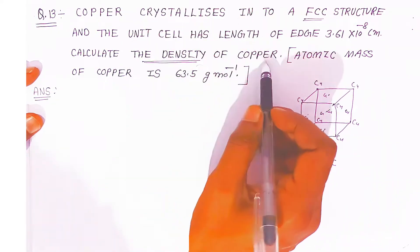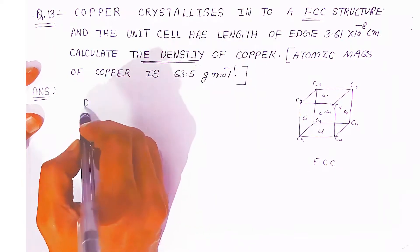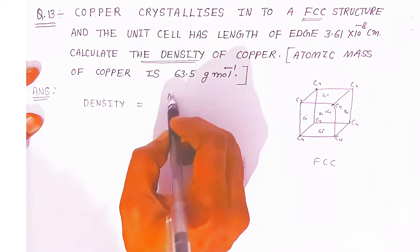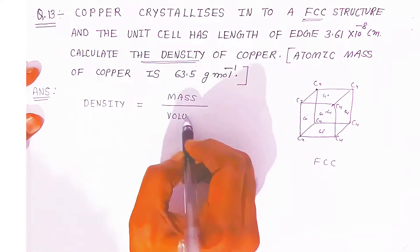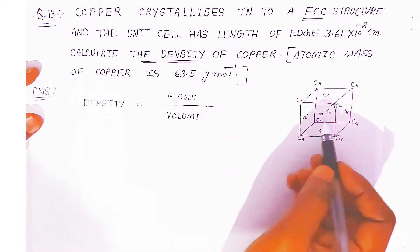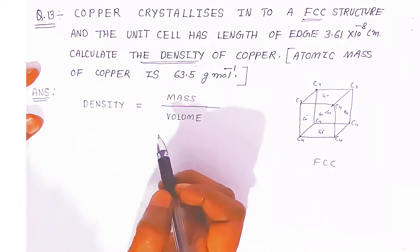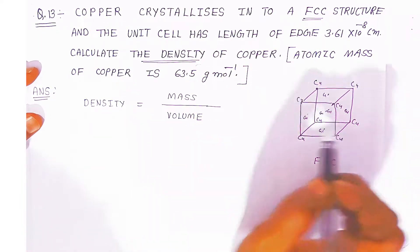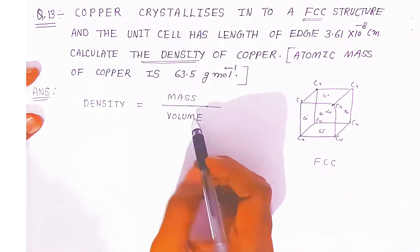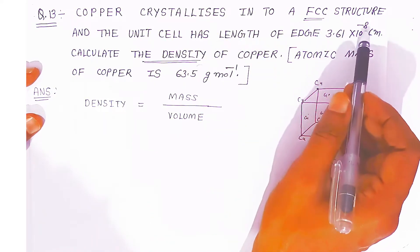Now you have to calculate the density of copper. Density is nothing but mass upon volume — mass of unit cell divided by volume of unit cell — and you will get the density of copper. First you should know the mass. For volume, you can calculate the volume of this unit cell because the side is given: 3.61×10⁻⁸ cm.